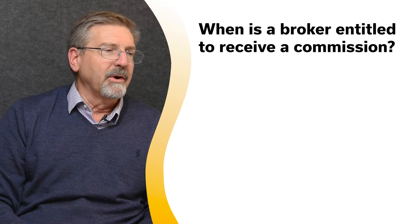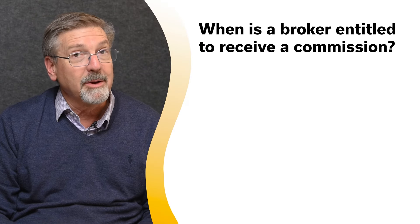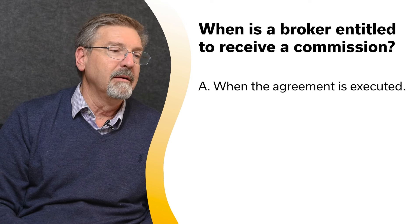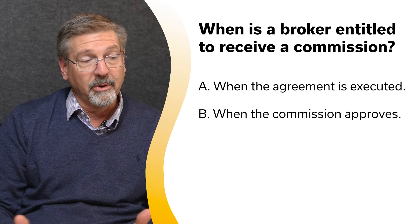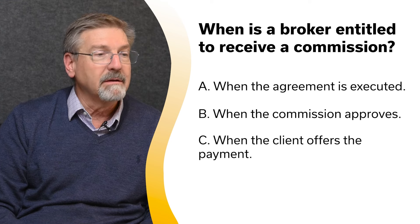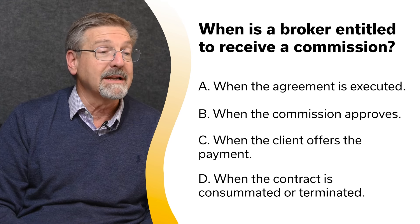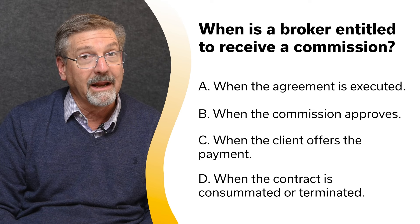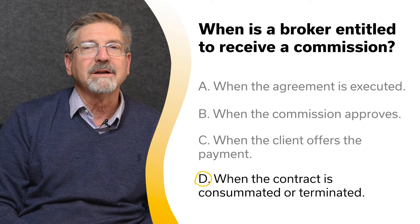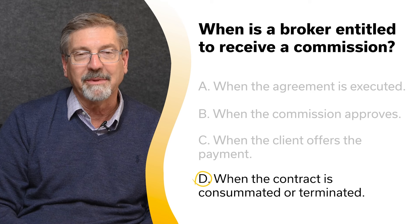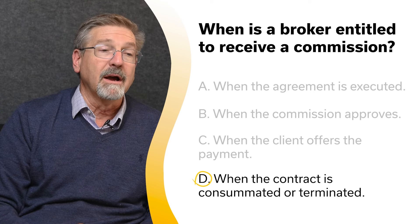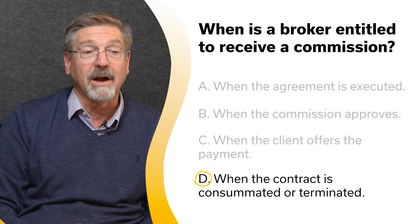When is a broker entitled to receive a commission? A. When the agreement is executed. B. When the Commission approves. C. When the client offers payment. Or D. When the contract is consummated or terminated. The correct answer is D — when the contract is consummated or terminated. A broker is only entitled to receive a commission upon consummation or termination of a contract.